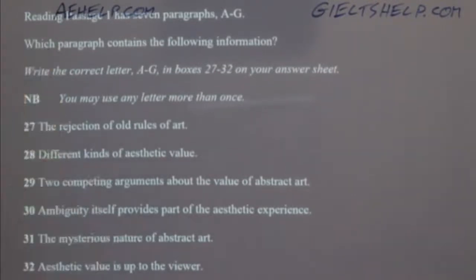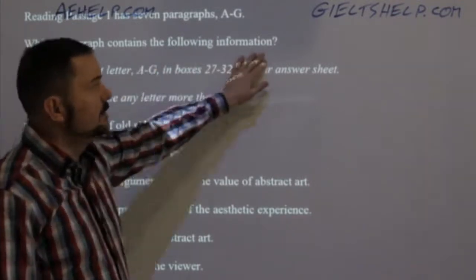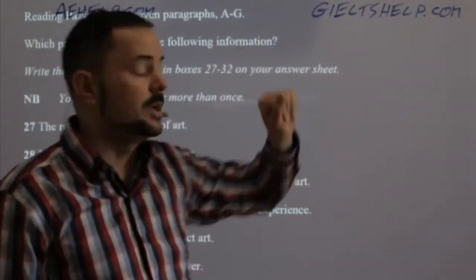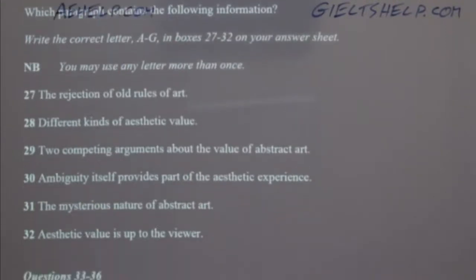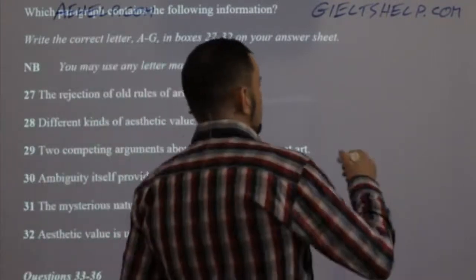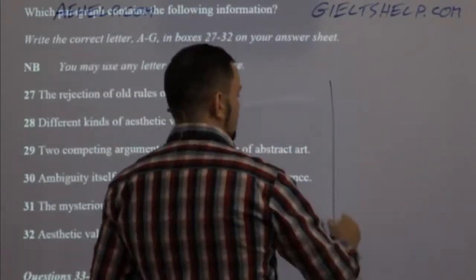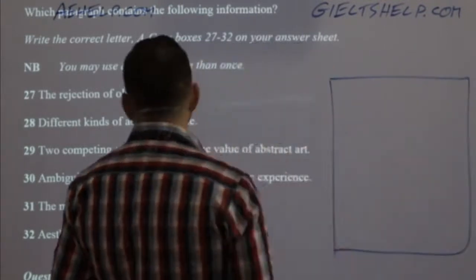So here is a question type: which paragraph contains the following information? This is very popular — I actually had two of these in my exam that I just did. The way it looked in the computer-based test is they have like a checkbox system. Let me see how many paragraphs we have here — we have through G.